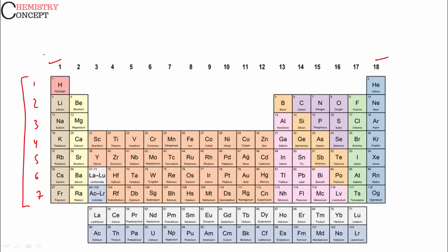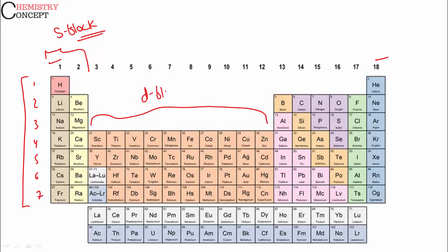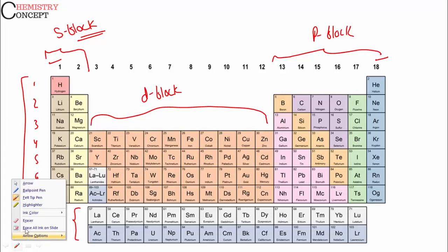We can classify elements into blocks. Group 1 and group 2 are called s-block elements. Groups 3 to 12 are called d-block elements. Groups 13 to 18 are called p-block elements. The two series given at the bottom — lanthanoids and actinoids — are called f-block elements.